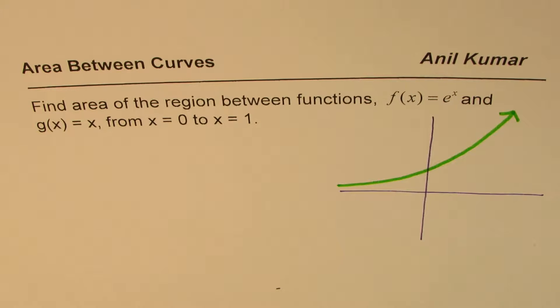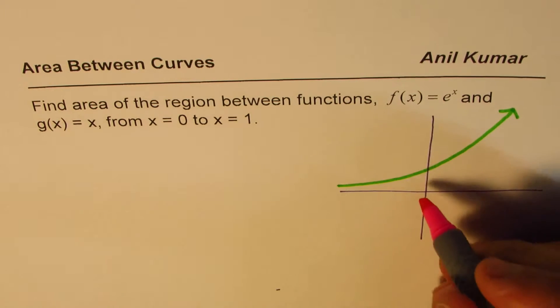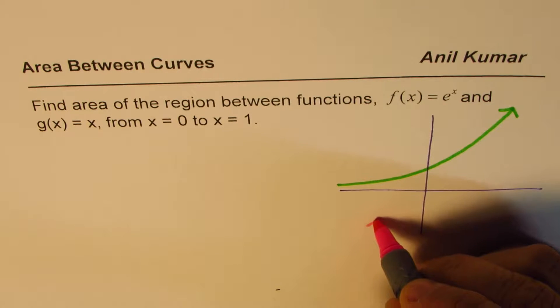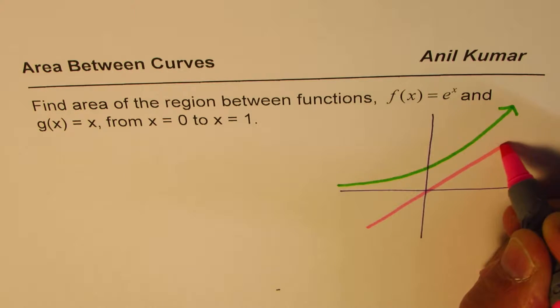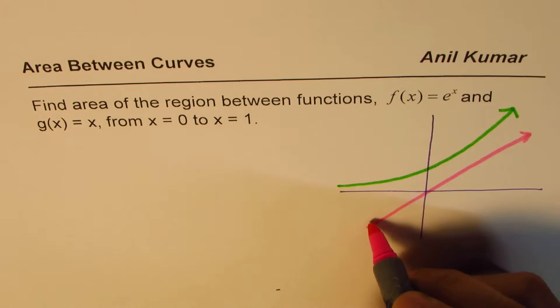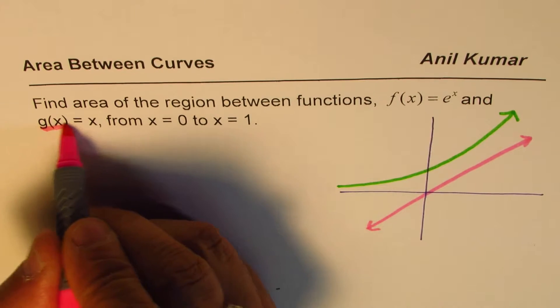g of x equals x is a straight line dividing quadrant 3 and 1, kind of like this. So these are the two functions. So that is g of x.